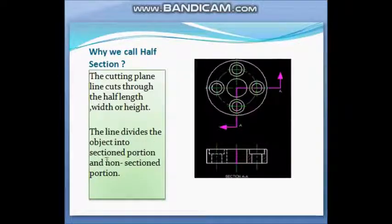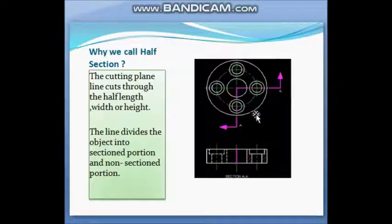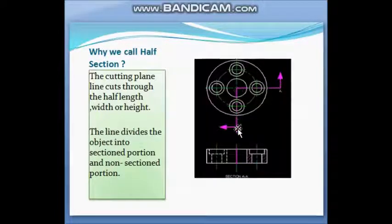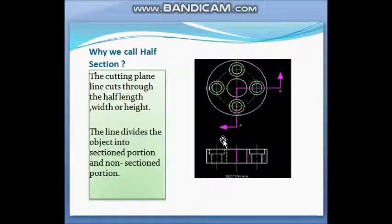Now it is half section. Half section means the line divides the object into a sectioned portion and a non-sectioned portion. The cutting plane cuts the object at half the length or width. The total length is the diameter, so the section line indicates half section because it is drawn over only half the object. The hatch line indicates that the object has been sectioned in the half portion, and dotted lines remain on the non-sectioned part.